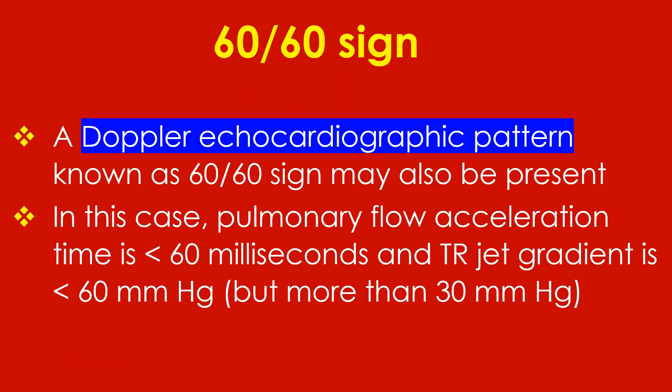A Doppler echocardiographic pattern known as the 60/60 sign may also be present in pulmonary embolism. In this case, pulmonary flow acceleration time is less than 60 ms and tricuspid regurgitation jet gradient is less than 60 mmHg but more than 30 mmHg.